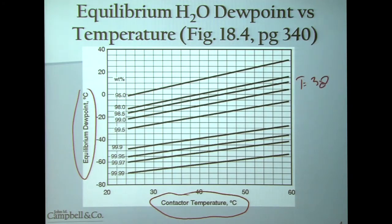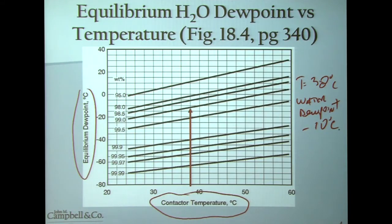To show how to use this, let's use an illustration where the contactor temperature is 38 degrees C and we're looking to meet a water dew point of minus 10 degrees. You go into the curve at 38 degrees on the x-axis, then look at minus 10 degrees water dew point on the y-axis. Where they meet, we find that at equilibrium we require a 99.0 weight percent lean TEG concentration.